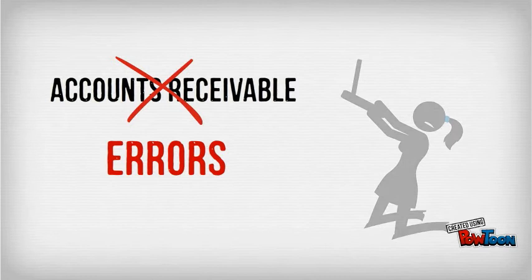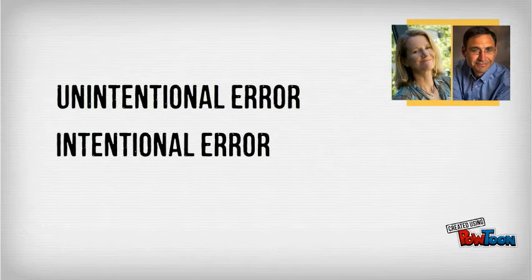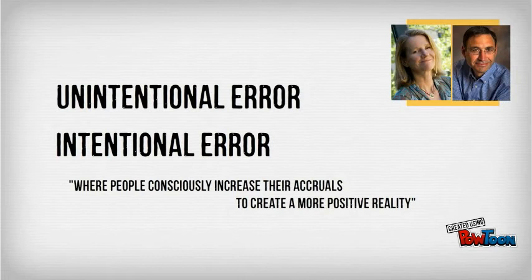Now, how can we link the situation of Jenny's accrual quality to the paper by Chow and Chen? The situation we just explained is an example of an unintentional error. There are also intentional errors, where people consciously increase their accruals to create a more positive reality. The paper by Chow and Chen is the very first and only paper that investigated both of these errors.